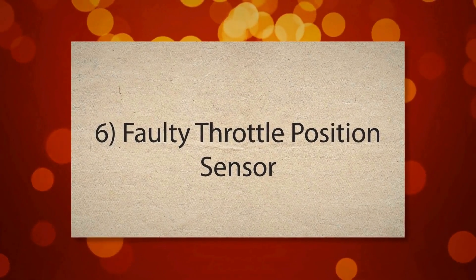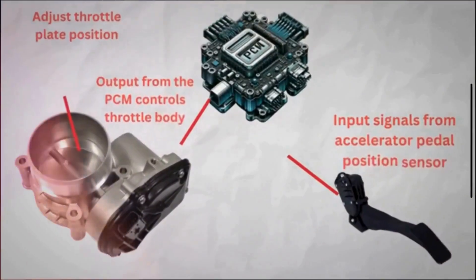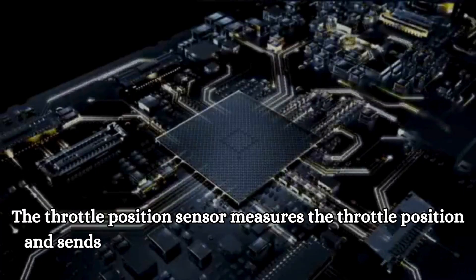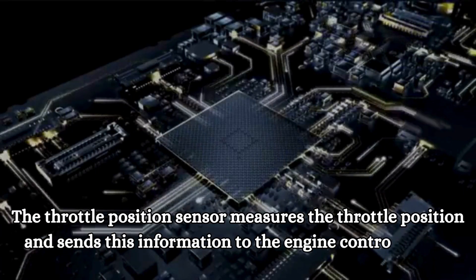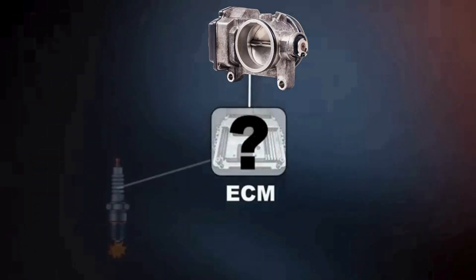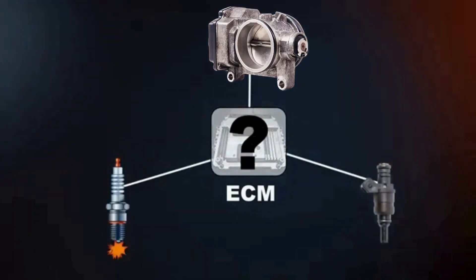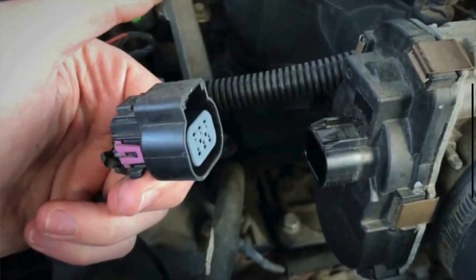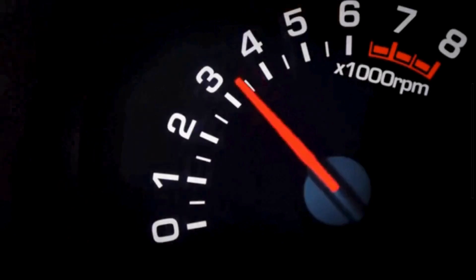6. Faulty Throttle Position Sensor. The throttle position sensor measures the position of the throttle and sends this information to the engine control unit to regulate the air-fuel mixture. A faulty TPS can lead to incorrect air-fuel mixture adjustments. This causes the engine to struggle under additional loads like when the AC is on, resulting in shaking.